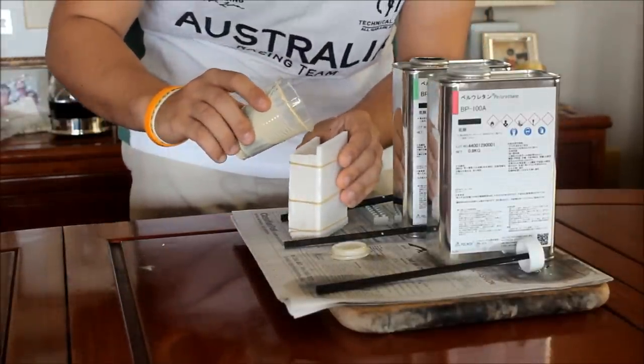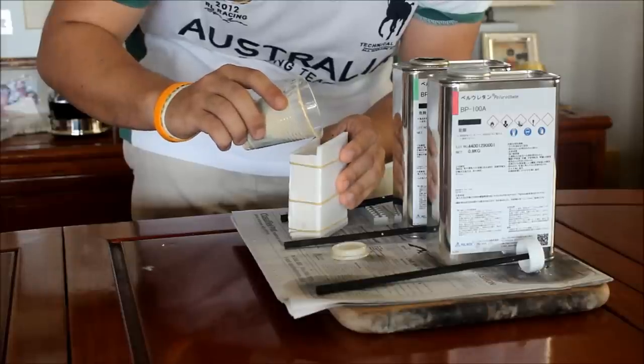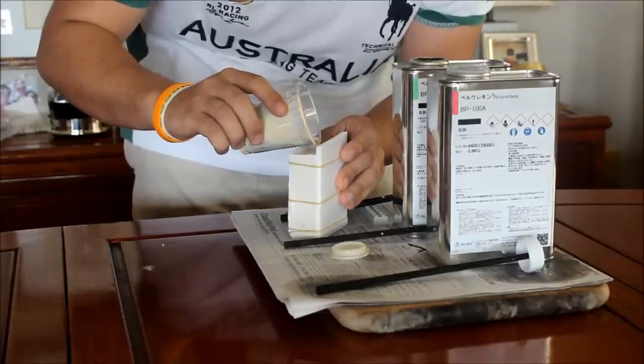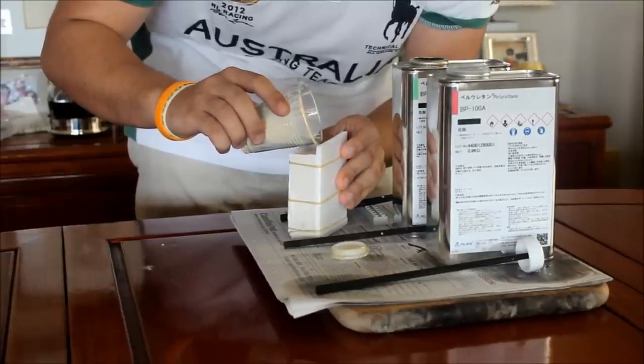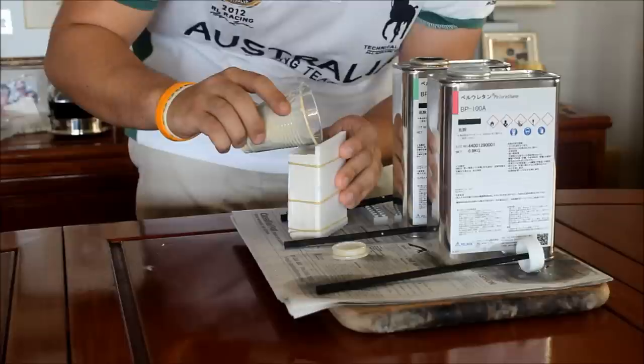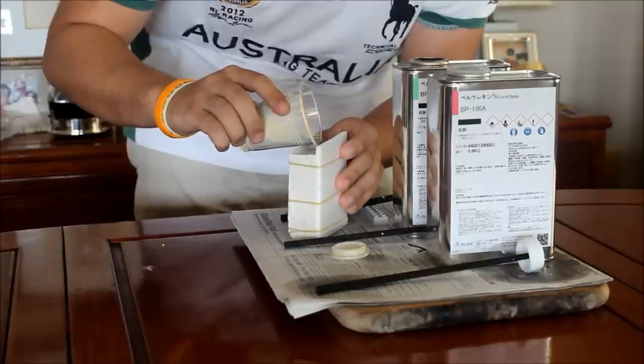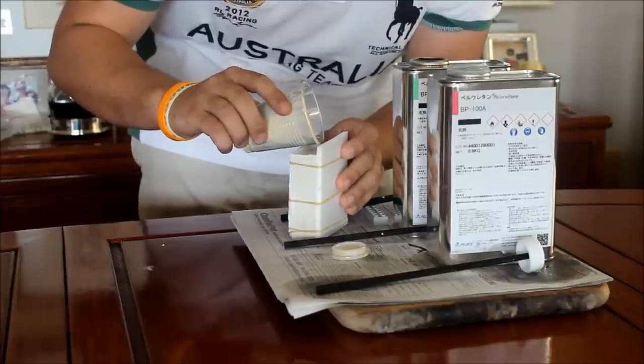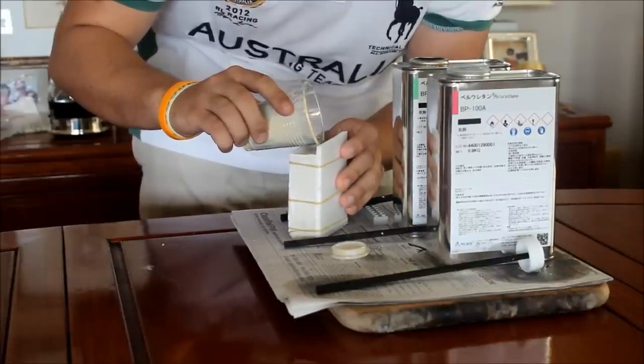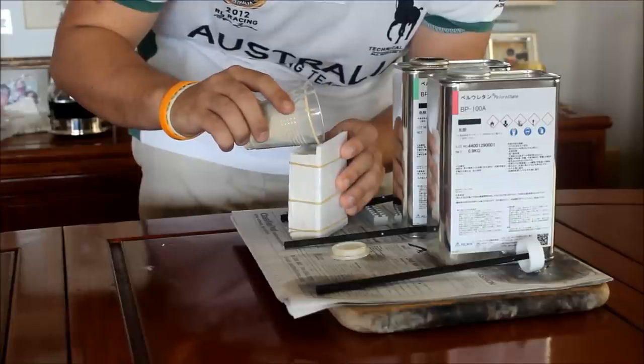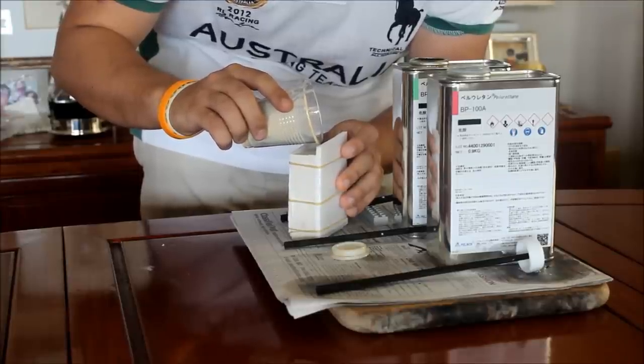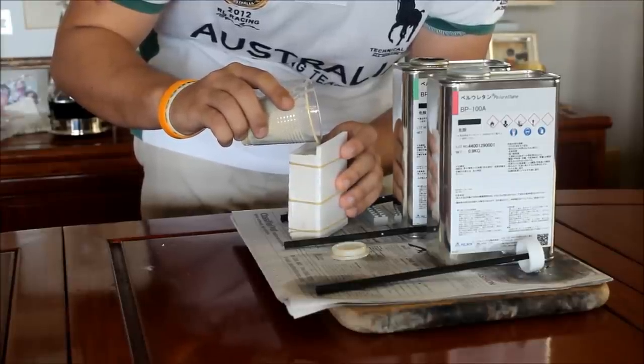Now what's happening when I pour this in is not only will it give me a cast of my Cortana data chip that has metal powder embedded in it, but it'll also bond with that powder that I dusted onto the surface, giving it a nice top layer with lots of metal powder on top.